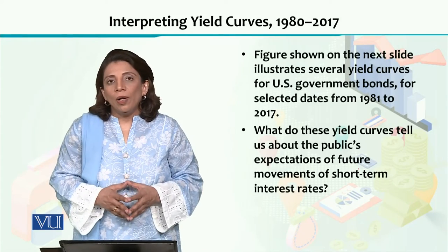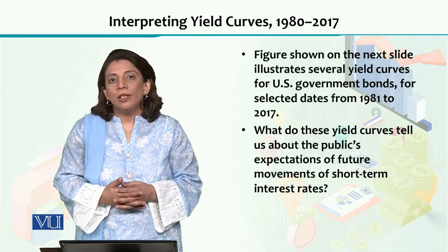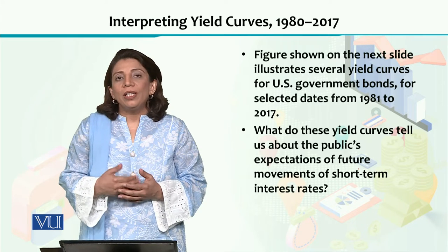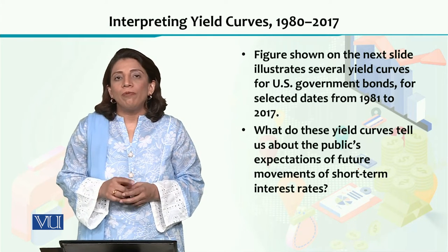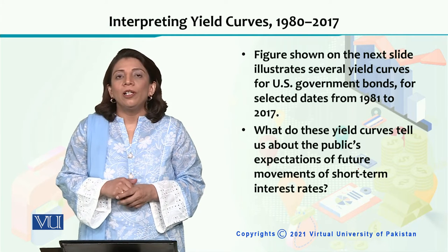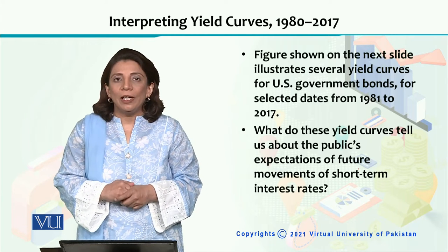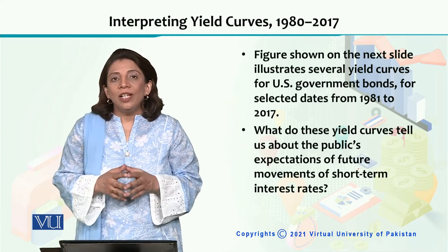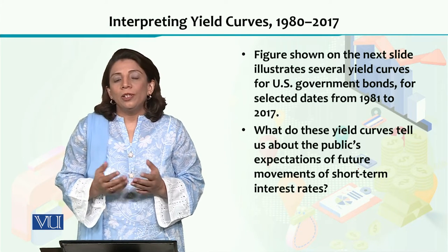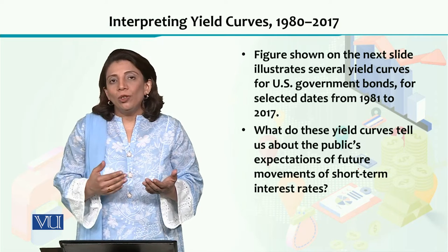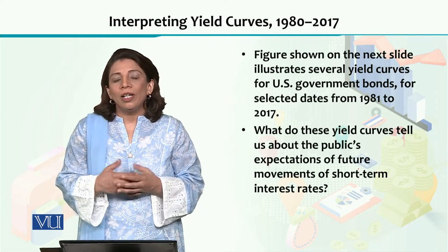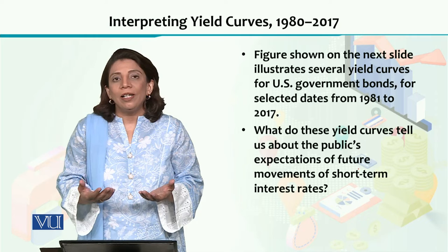We have been talking a lot about yield curves and their different shapes. We have discussed that yield curves can be upward sloping, horizontal straight lines, or inverted yield curves, which are downward sloping. It is interesting to note that if we look at historical data, the yield curves are built on a real data basis.